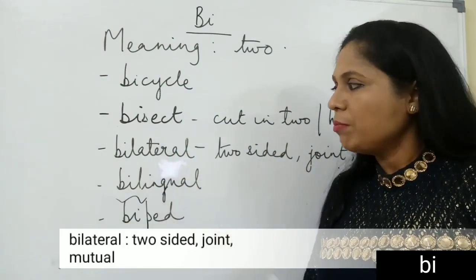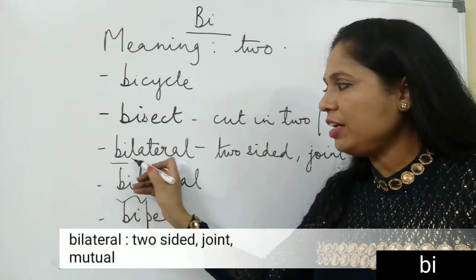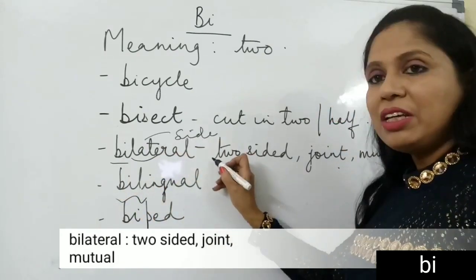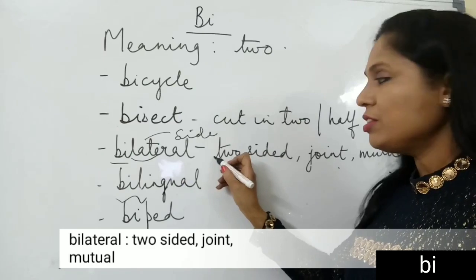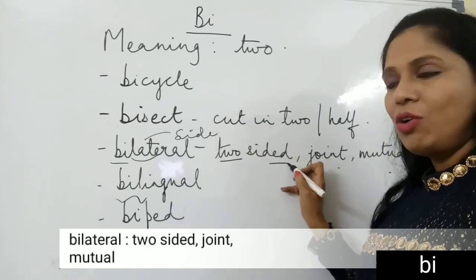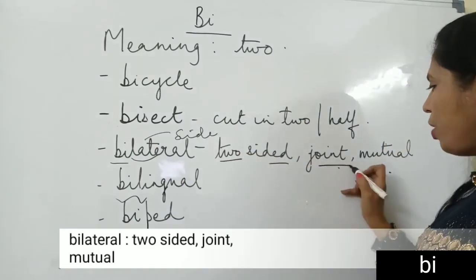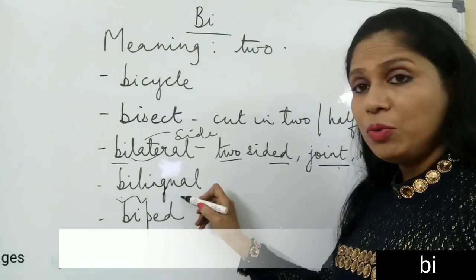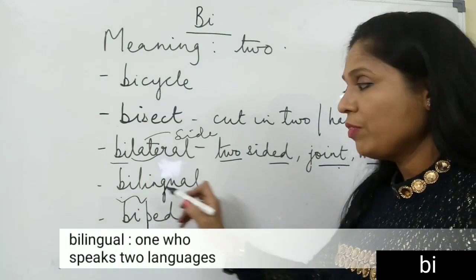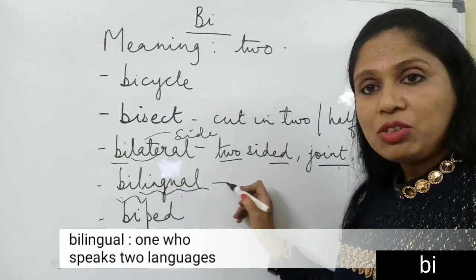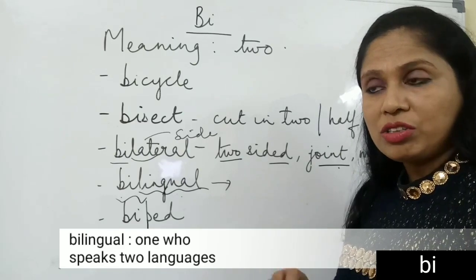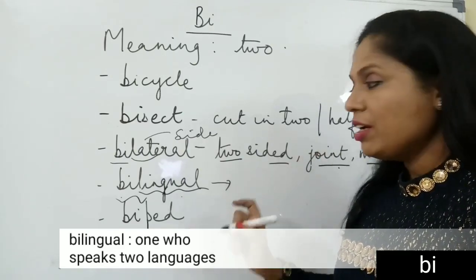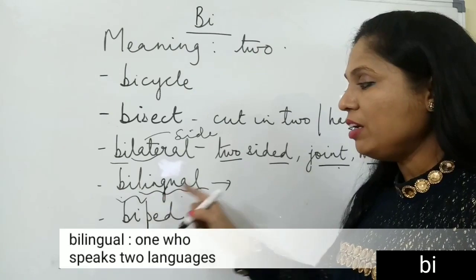Bilateral — bi means two and lat means side, so something which is two-sided. Bilingual — bi means two and lingual relates to language, so someone who speaks two languages is bilingual.